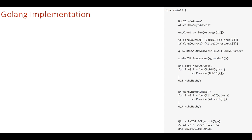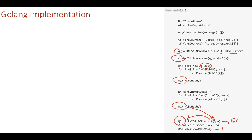Let's look at the Golang implementation. We generate a secret value S using the order of the curve as the maximum value in the full space. We then hash the identities using SHA-256 to get hash values, and map those hash values onto the G1 curve. We then create Alice's secret key by multiplying the scalar S with her identity point on the elliptic curve.